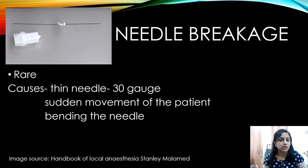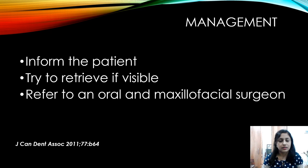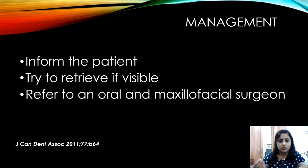The hub is where the needle attaches to the syringe, and that is the weakest part of the needle where it can fracture. If you use a long needle, it is easy to retrieve it because you will be able to see it when it breaks. If the needle breaks, inform the patient, and if you can see it clearly, try to remove it immediately. If you cannot see it, refer the patient to an oral and maxillofacial surgeon for removal under general anesthesia using a 3D CT scan.